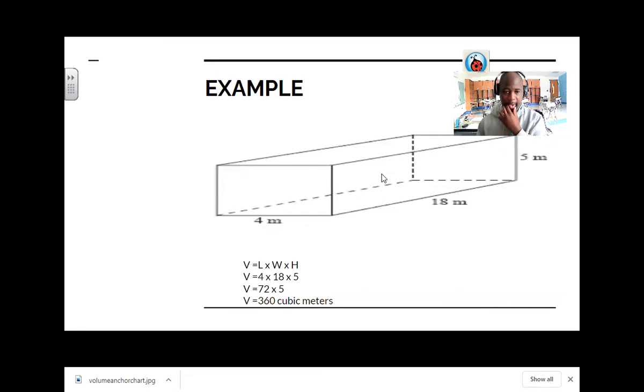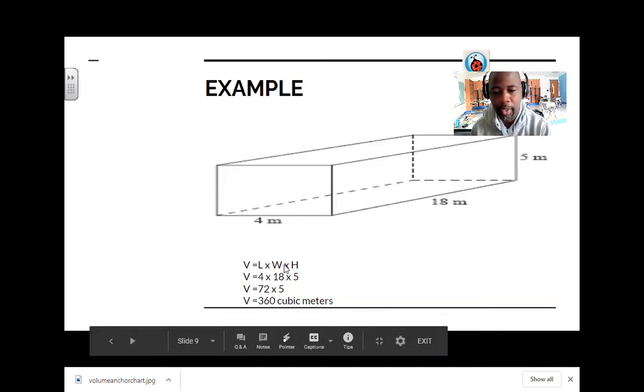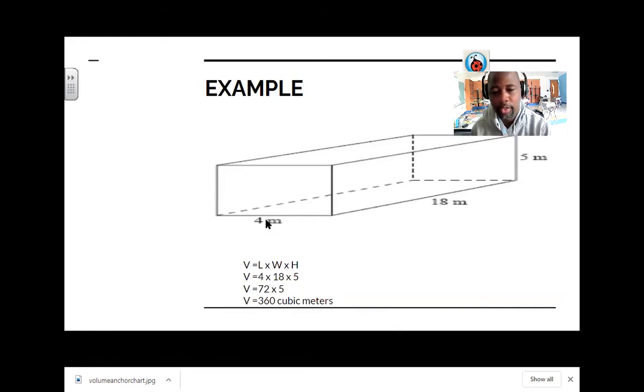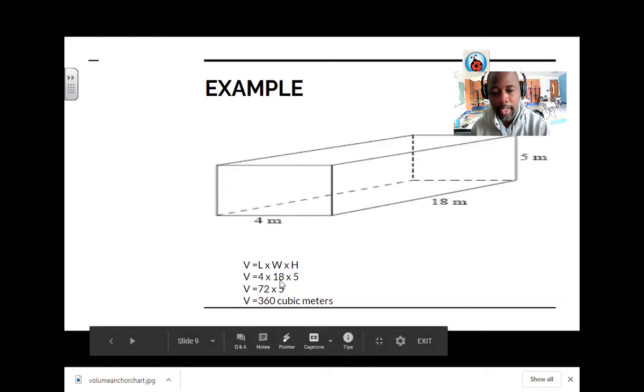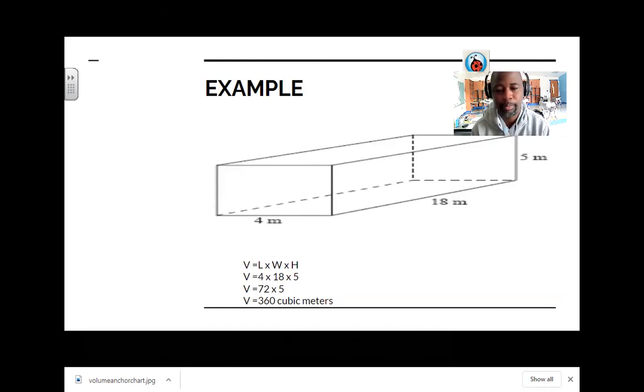Here's an example of a rectangular prism. We have a length of 4 meters, a width of 18 meters, and a height of 5 meters. So our volume equals length times width times height. In this scenario, our length is 4, our width is 18, and our height is 5. So we got 4 times 18 times 5. Essentially what you're going to do is create 2 multiplication problems to solve this answer.